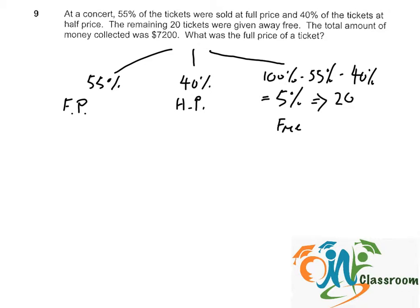With this, we can find out, since 5% equals 20, 1% will be 20 divided by 5 equals 4.